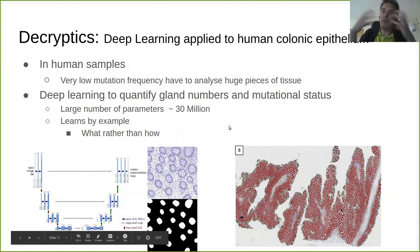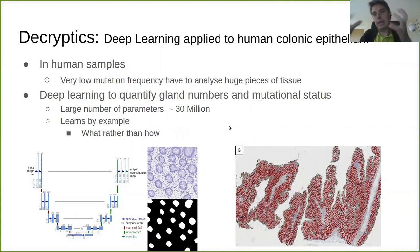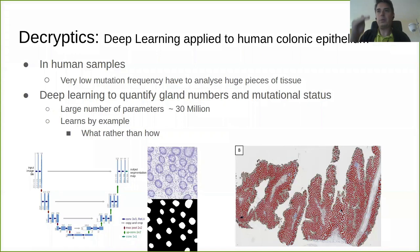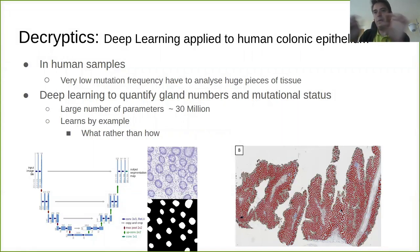The network finds crypts in large tissue sections containing one or two thousand crypts, colors them all in, characterizes them, and finds their mutational status. The mutational part is still being refined — since we don't have many mutations to train on, we overshoot a little and then manually curate the results: it gives you a small candidate list, you go through and curate it, and we're working on automating that.